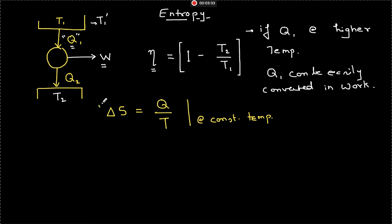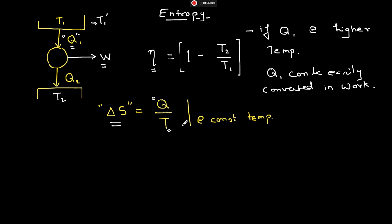Because the entropy change will be higher if you get the same amount of heat at a lower temperature, it is not useful. More useful heat is when you get the same heat at a higher temperature, because then the change in entropy of the system will be lower. So this is the reason why entropy is defined as heat absorbed divided by the temperature at which heat is absorbed. If temperature is not constant, then the small change in entropy is the small amount of heat absorbed divided by temperature.